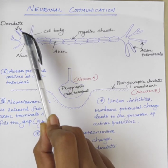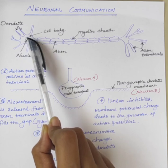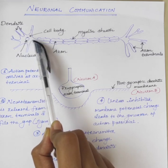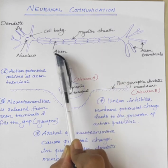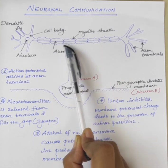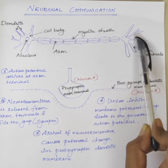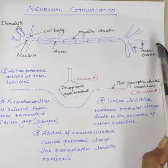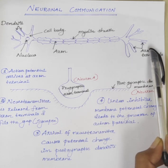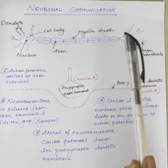From the cell body, information is carried through a fiber-like structure known as axon. From the axon, information passes to the dendrite of the nearby neuron through axon terminals.